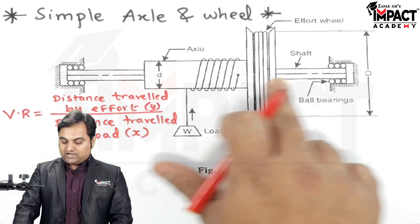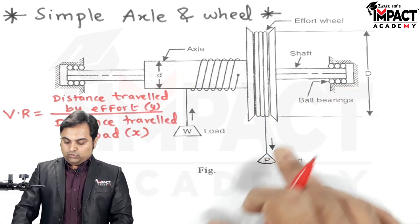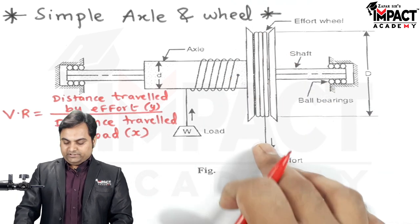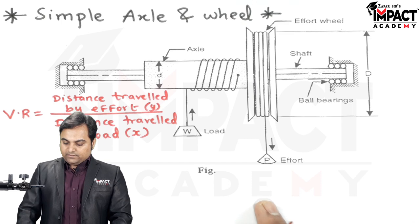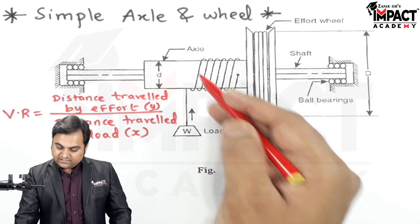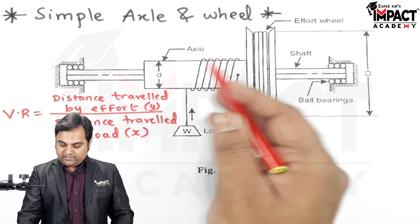So if the effort wheel is rotated, the load drum or the load axle will also rotate. And here the axle which is the load drum, as we can see here, the load is wound around it.